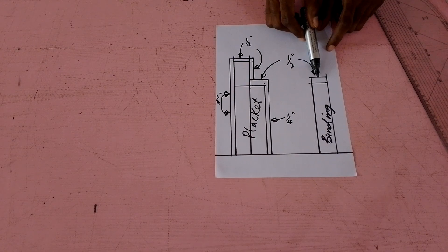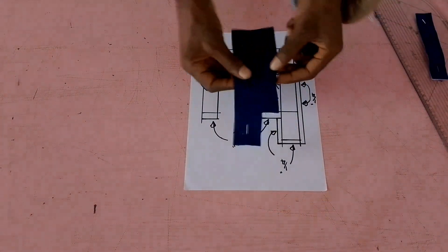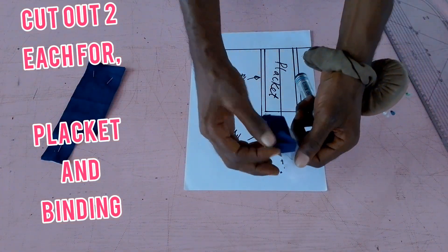For the binding, I'm just adding half inch. However, if the width of your binding is 1.5 inches, then add half inch more to the binding. Here's the placket on fabric and here's the binding on fabric.